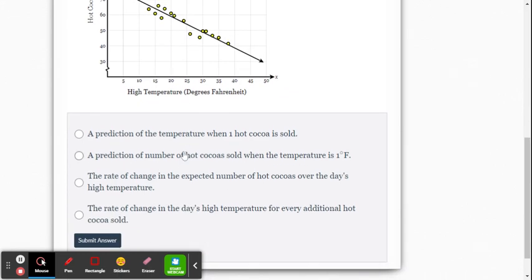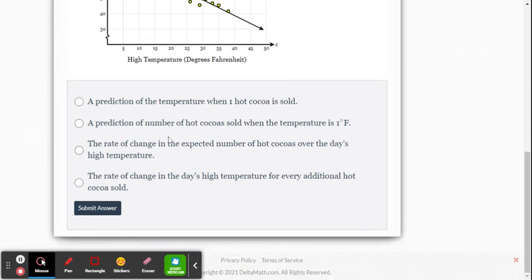So the slope is the prediction tool. So it's not for just one. It's not for one degrees. The rate of change in the expected number of hot cocoa over the day's high temperature. The rate of change in the day's high temperature for each additional hot cocoa sold.